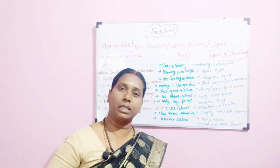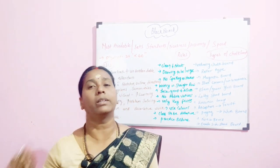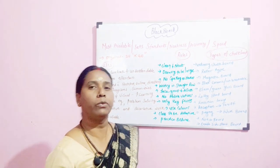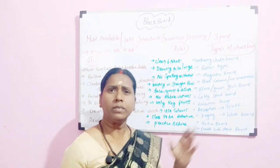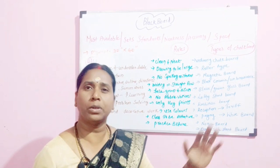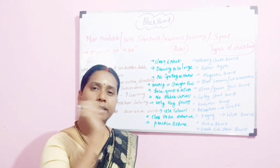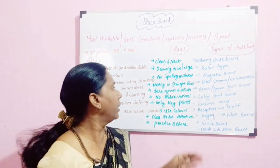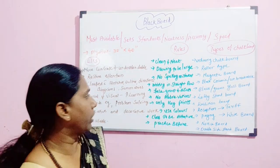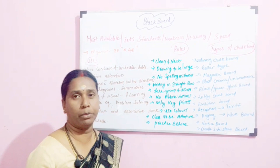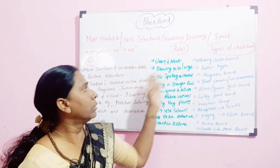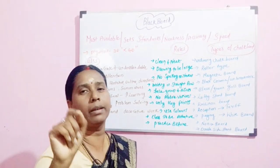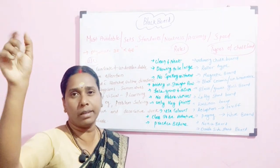Once the teacher makes a spelling mistake, it will be reflected in all 50 notebooks. So you must be careful when writing on the board. When you write in a straight line, the student also follows — from one corner to the other corner it has to be in a straight line. And then, no abbreviations. You are not supposed to use any abbreviations.